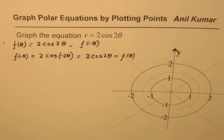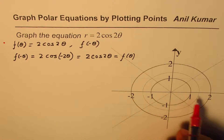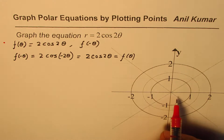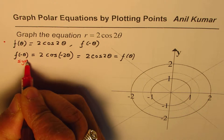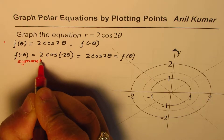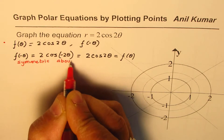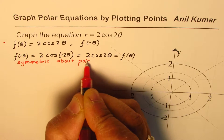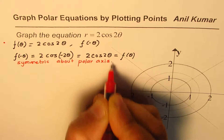Since f(−θ) equals f(θ), the graph of this function is symmetric about the polar axis.